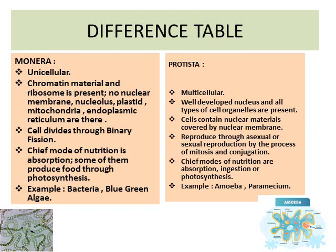Monera cells divide through binary fission. Protista reproduces through asexual or sexual reproduction by mitosis and conjugation. Conjugation is the union of two gametes which are structurally similar but biologically different. The chief mode of nutrition of Monera is absorption, though some produce food through photosynthesis. Protista uses absorption, ingestion, or photosynthesis. Examples: Monera — bacteria, blue-green algae; Protista — amoeba, paramecium.